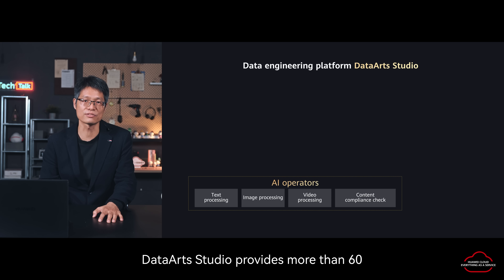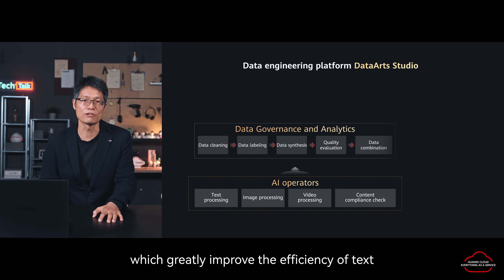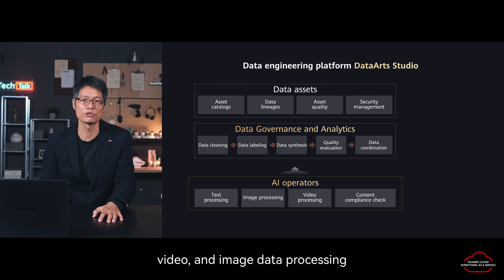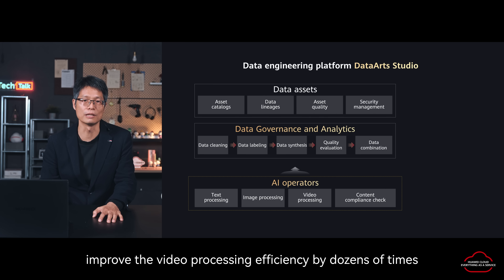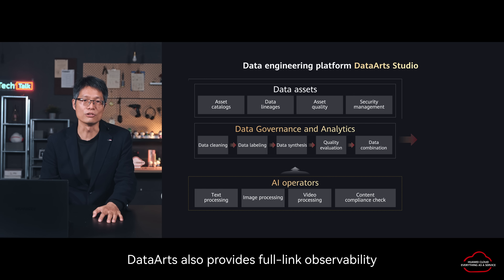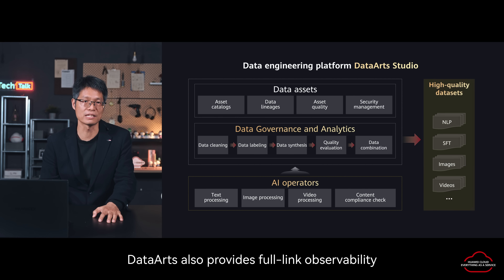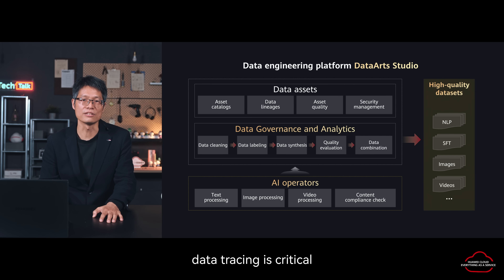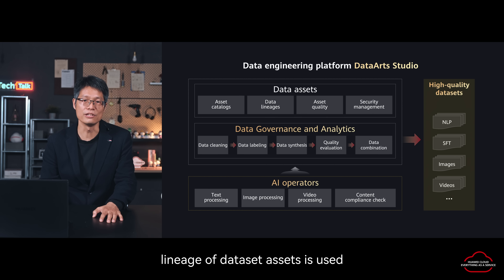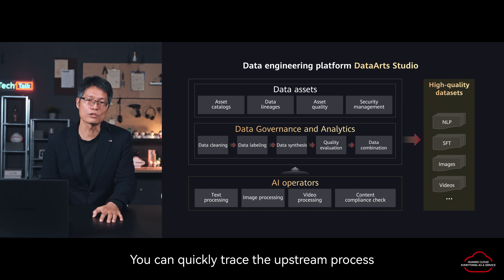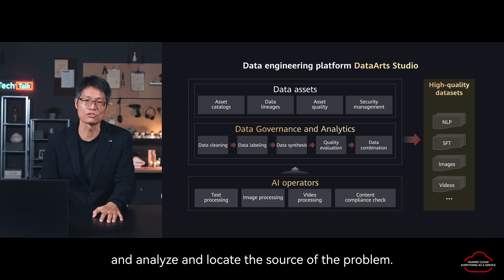Data Studio provides more than 60 built-in intelligent operators, which greatly improve the efficiency of text, video, and image data processing. For example, in video data processing, automatic clip segmentation and automatic extraction of subtitles and watermarks improve video processing efficiency by dozens of times. Data Studio also provides full-link observability and lineage analysis of data and model assets. During massive data processing, data tracing is critical — when the model effect is inaccurate, you need to quickly find out which phase and which data processing logic may be faulty. Using the full-link lineage of data assets, you can quickly trace the upstream process and analyze and locate the source of the problem.